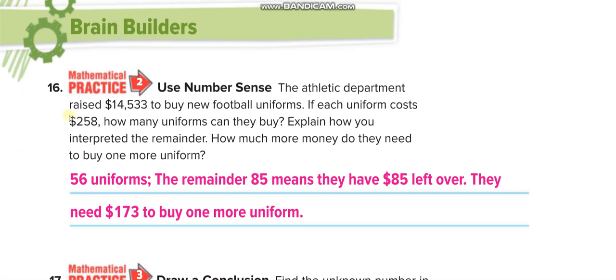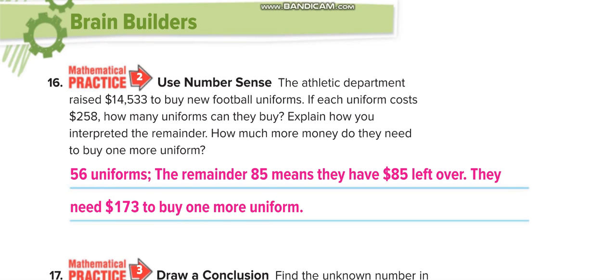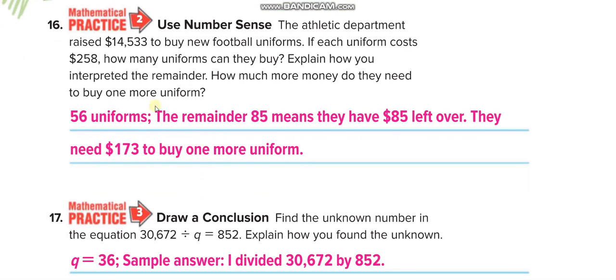An athletic department raised 14,532 dollars to buy a new football uniform. If each uniform cost this much, so you divide them, you will get 56 and remainder 85. So they can buy 56 uniforms and 85 dollars left over. They need another 173 with this 85 to buy one more uniform, because each uniform cost 258. So 85 plus 173 equals 258.